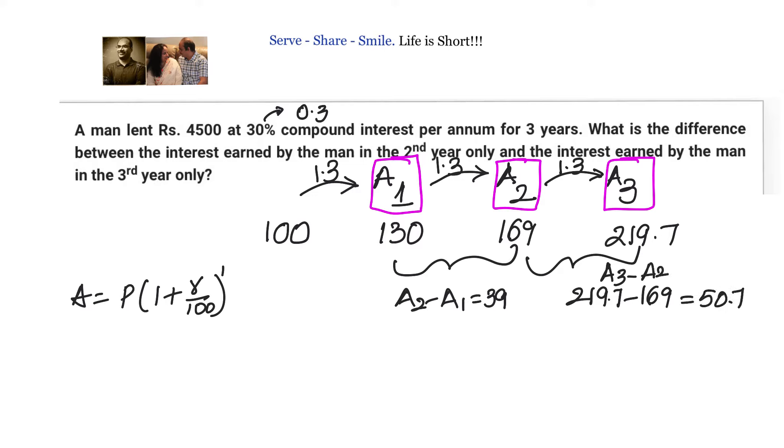What we need to find out is the difference between these two. So that will be 50.7 minus 39, that equals 11.7. So if I start with 100 rupees and 30% compound interest we apply, we understood that the difference between the third year interest only and the second year interest only is 11.7.